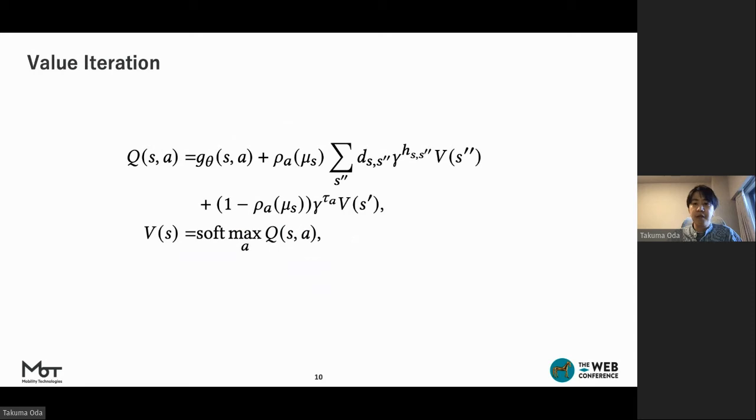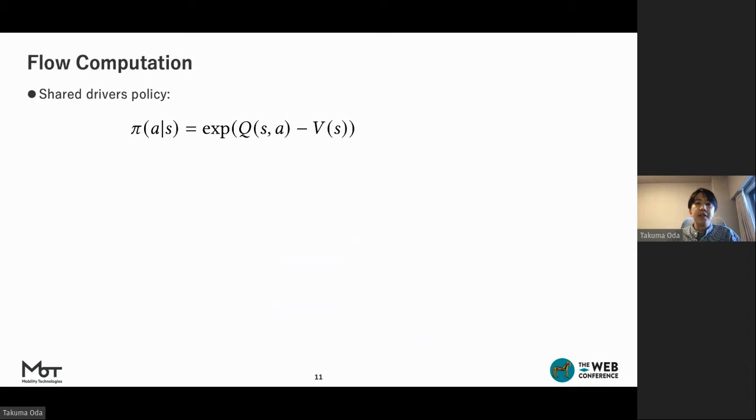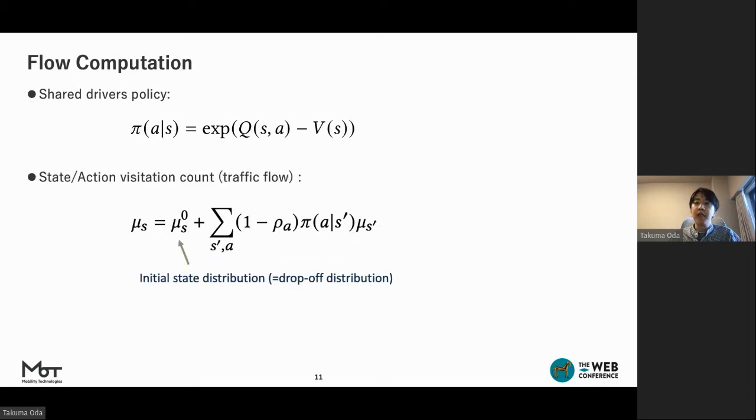Given fixed traffic flow, the optimal policy can be computed by iterative Bellman backups. Using state and state action values, the shared driver policy is given by this equation. The visitation count mu can be obtained by propagating state distributions by executing policy pi starting from passenger drop-off distribution as initial state distribution, which satisfies this traffic equation.